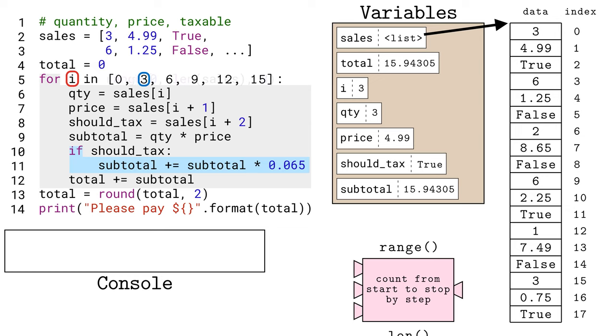The next value i steps to is 3, and the code in the loop runs for a second time. The qty variable gets the value from sales at index 3. The price variable gets the next value from sales at index 4. And the should tax variable gets the next next value at index 5. Multiplying quantity and price gives us the subtotal.